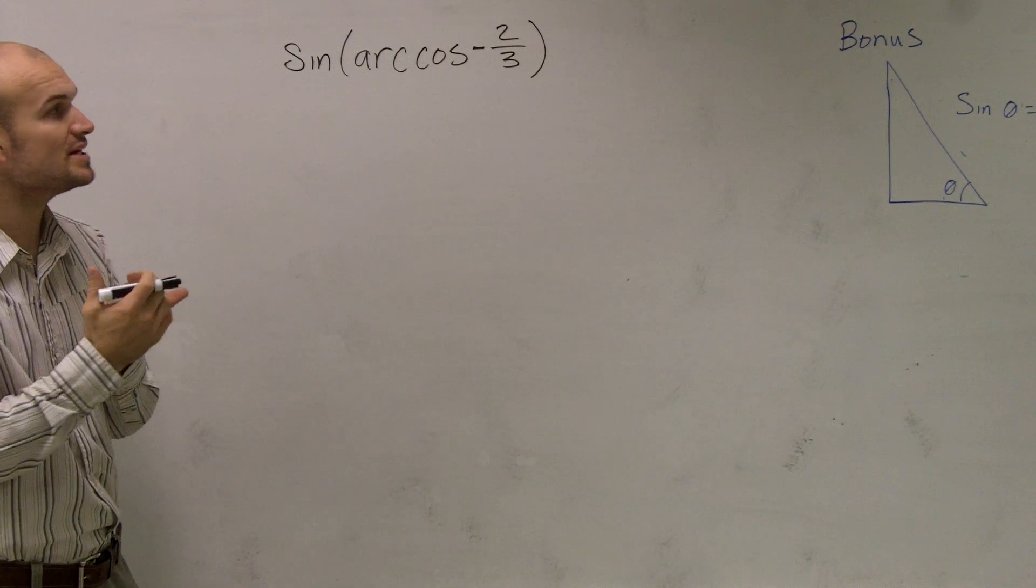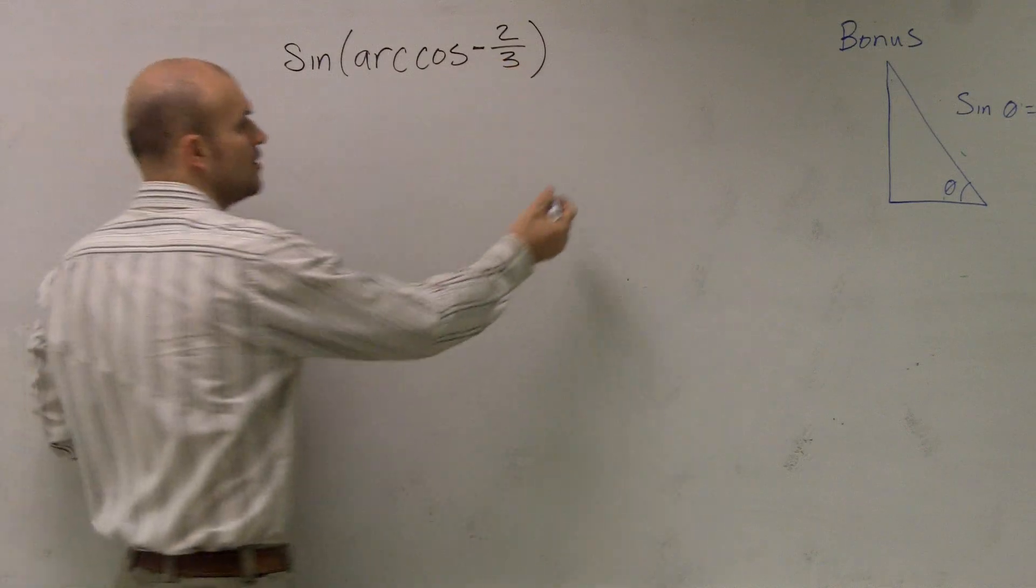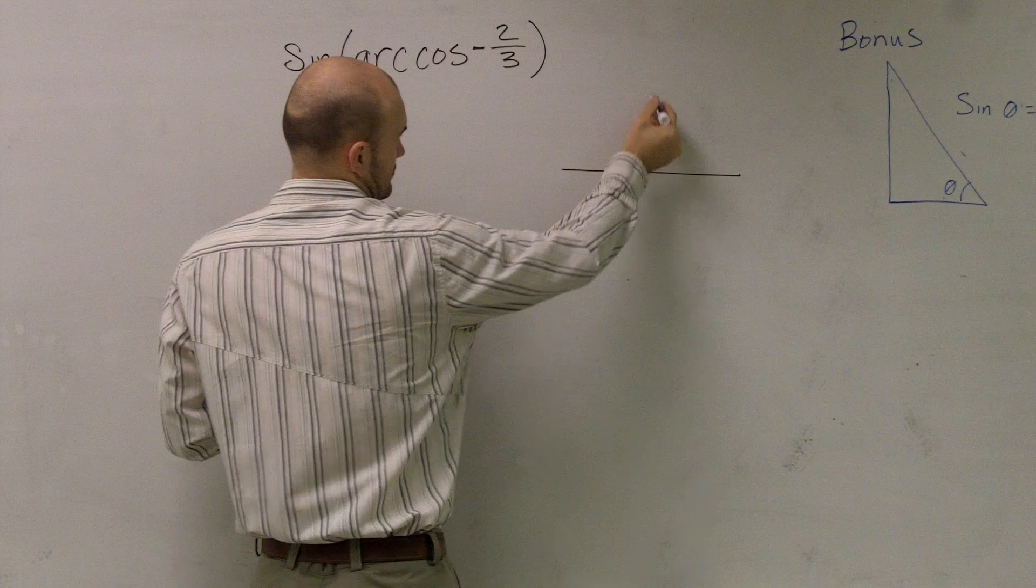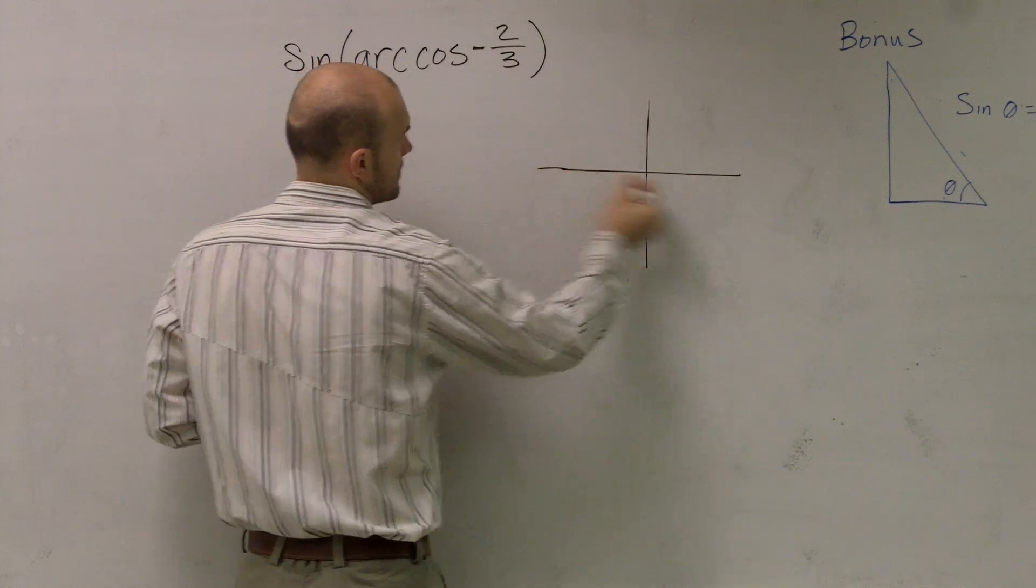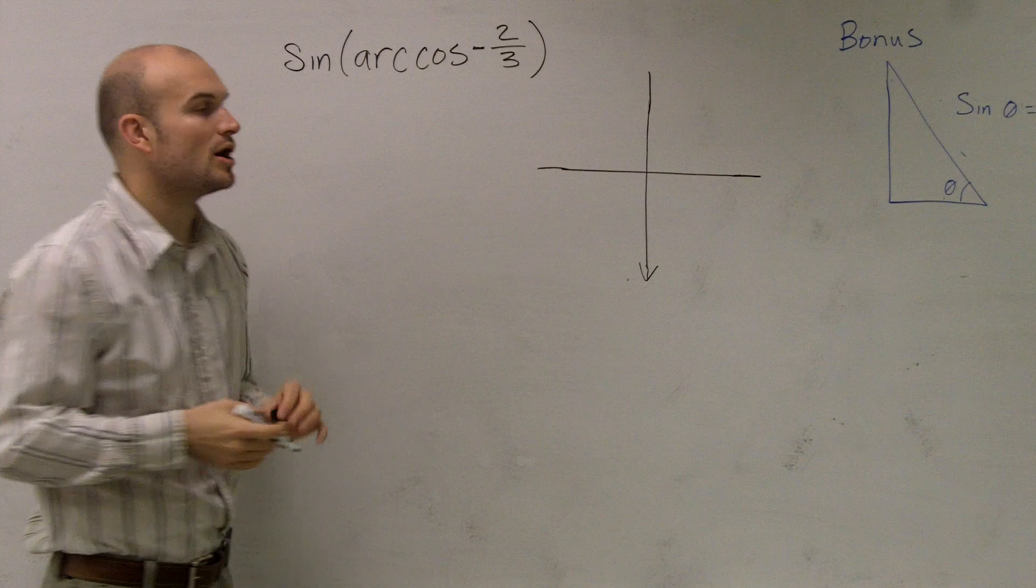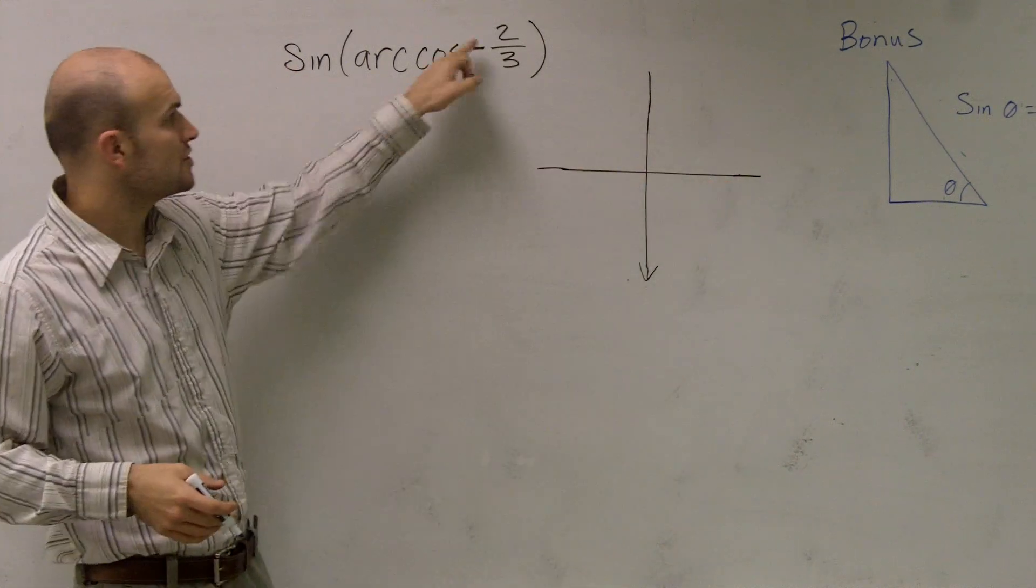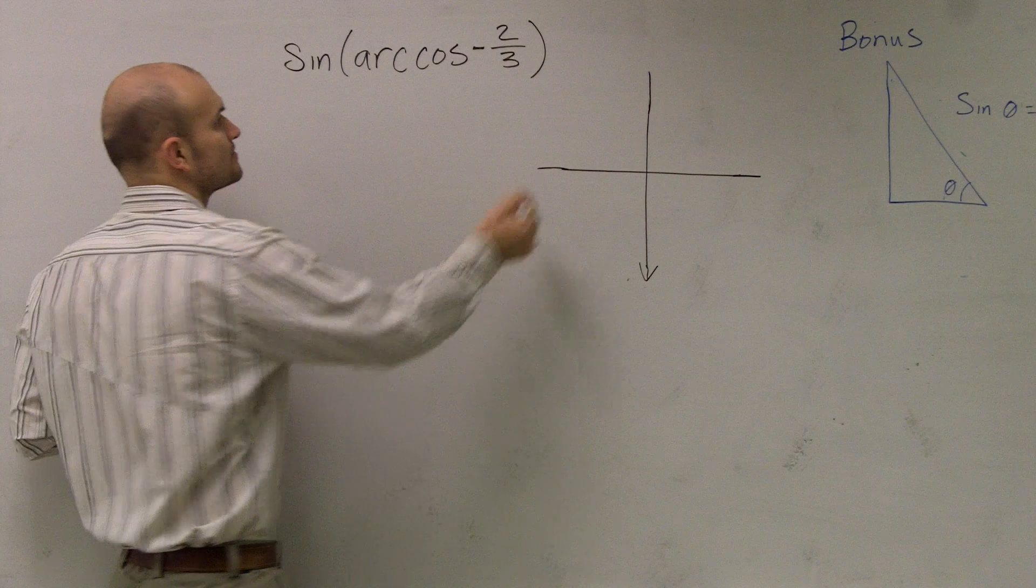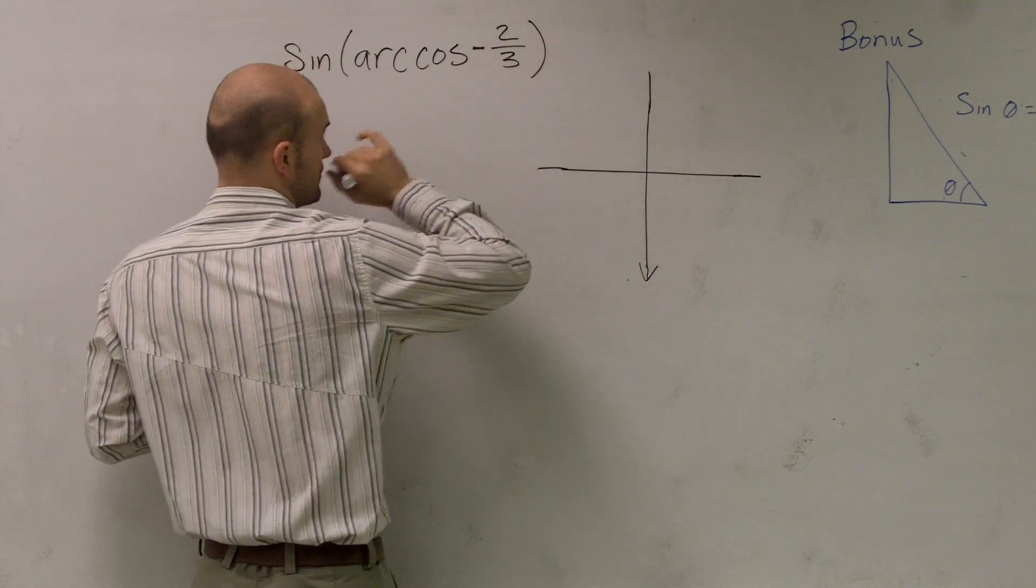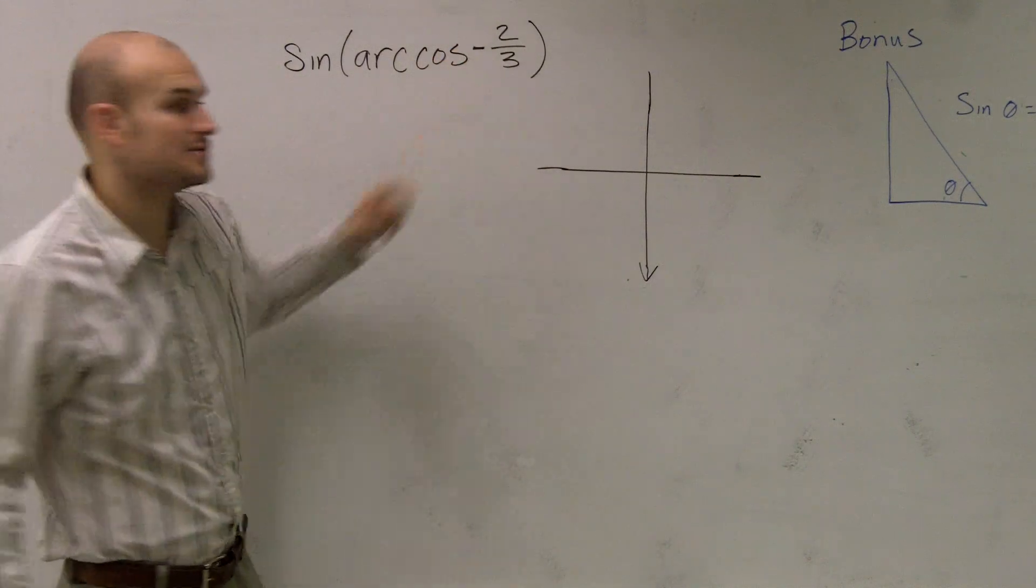Now, to do this, remember this just says sine of negative 2/3. If you remember cosine, when we're talking about the inverse graph of cosine, remember our restriction had to be between zero and π. So if I look at this as negative 2/3, remember negative 2/3 is going to tell me that it's always going to be your adjacent over your hypotenuse.